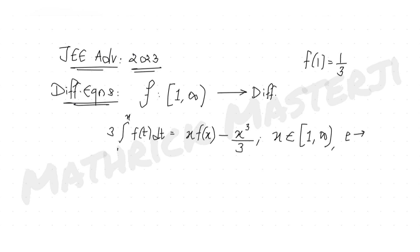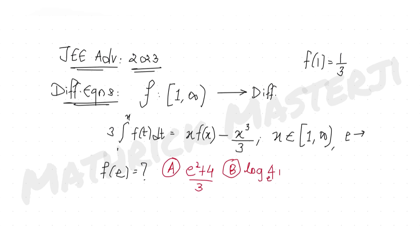The question asks us to find the value of f(e). The answer choices are: (A) e² + 4/3, (B) log 4 base e + e/3, (C) 4e²/3, (D) e² − 4/3. We need to figure out which one is correct.